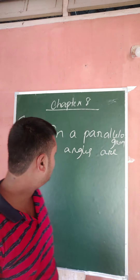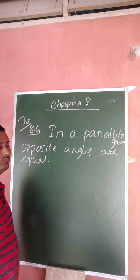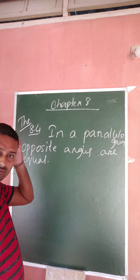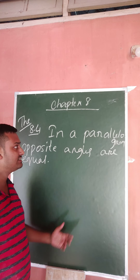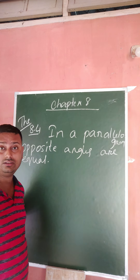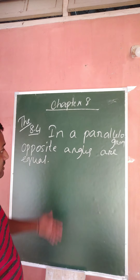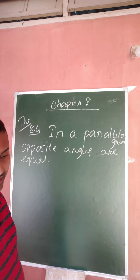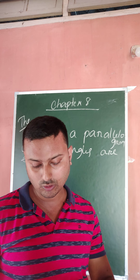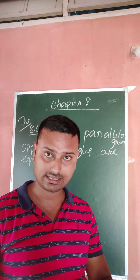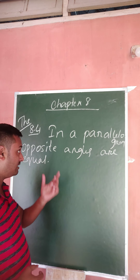We come to the next theorem — Theorem 8.4: in a parallelogram, opposite angles are equal. You can prove this theorem in various ways. If the opposite sides of a parallelogram are equal — that is not given, you have to prove it — but actually in Theorem 8.2, you already proved that in a parallelogram opposite sides are equal.